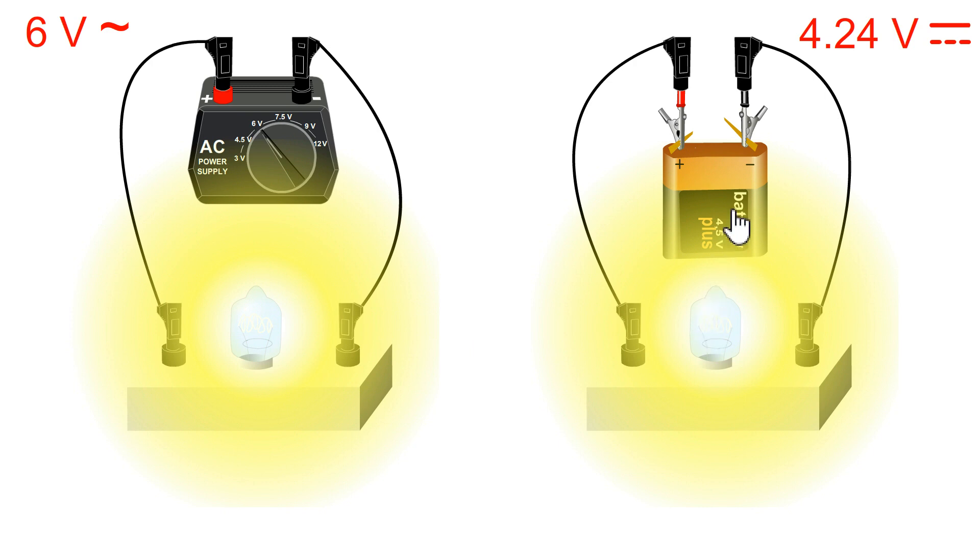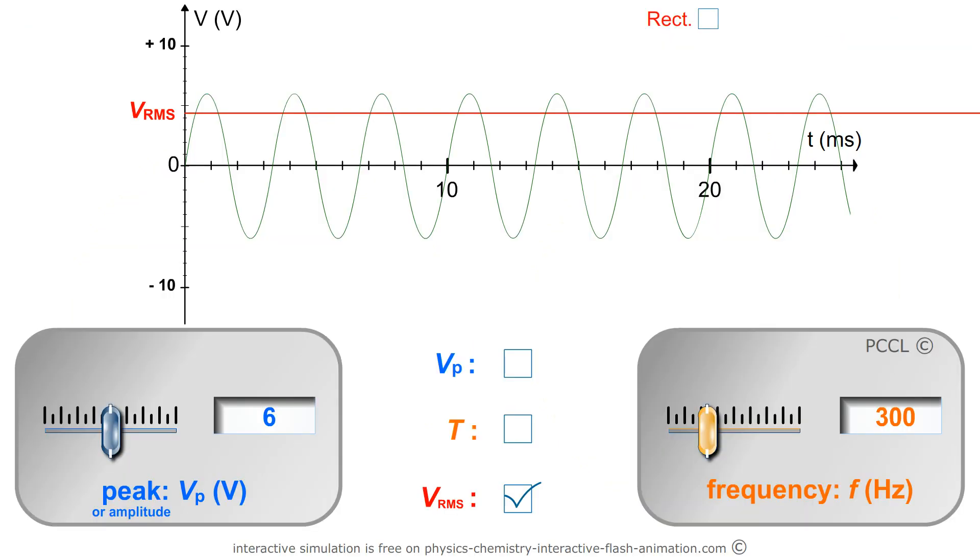We plug it in like this, it lights up. We plug it in like that, it lights up in the same way. So if I straighten out the negative half periods, the bulb is powered by something that looks like this. Well, RMS is the average of this voltage.